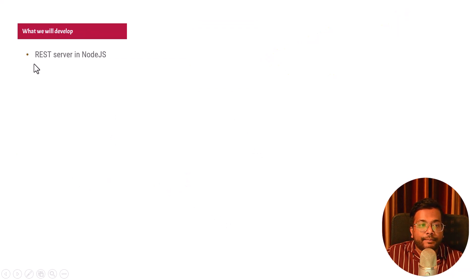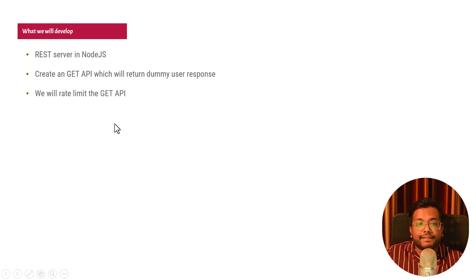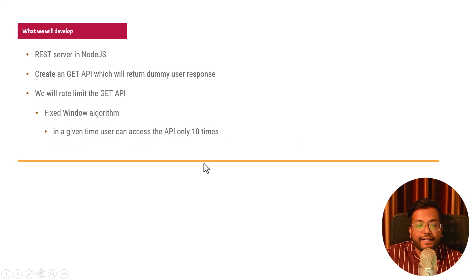What we are going to develop is a REST server in Node.js. We'll create a GET API which will return a dummy response, mimic that an API is present on our REST server, and finally rate limit it. We will use a fixed window algorithm. There are multiple algorithms like fixed window or sliding window, but we'll use the simple one: in a given time, a user can access the API only a fixed number of times.